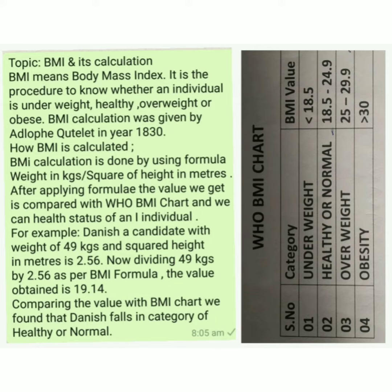For example: Danish ایک candidate ہے جس کا weight 49 kg ہے اور اس کی height meters میں square کر کے جو value ملتی ہے وہ 2.56 ہے۔ Now dividing 49 kg by 2.56 as per the BMI formula, the value obtained is 19.14. Danish کا BMI value 19.14 ملتا ہے۔